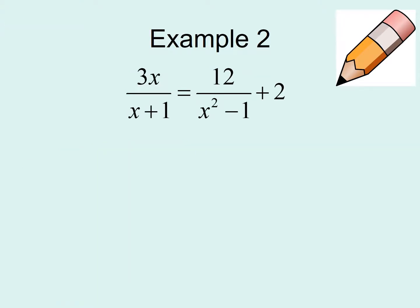Example number 2. We need to find a least common denominator — you can probably tell right away that they don't share common denominators. But we can factor the difference of squares: x squared minus 1 is the same thing as (x + 1)(x - 1). So now I know that one denominator has x plus 1, another already has (x + 1)(x - 1), and the other just has 1.